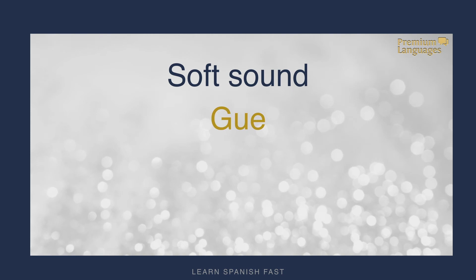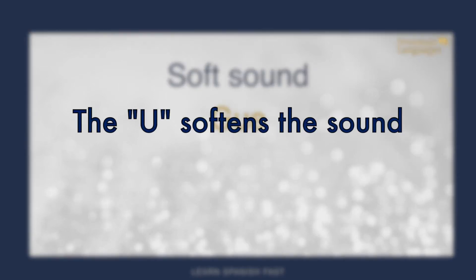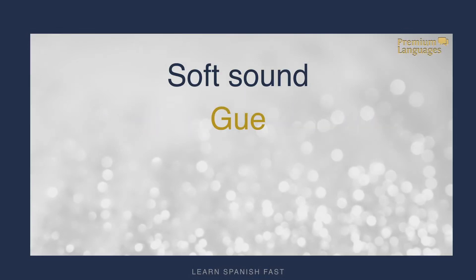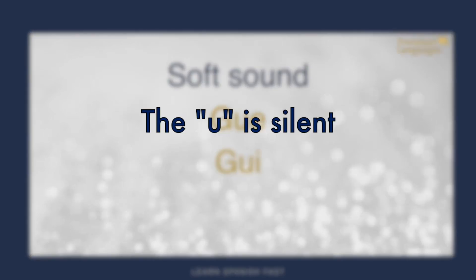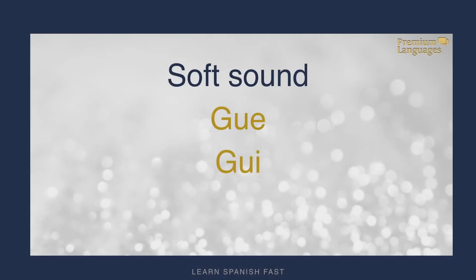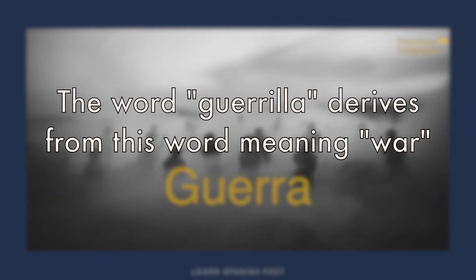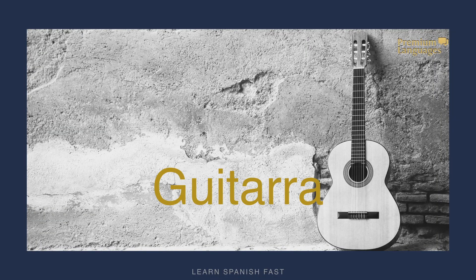The combination of G, U, and E produces a soft sound. If you add a U between the G and the E, it softens the sound from GHE to GHE. The same applies with I. You shouldn't be surprised — it's the same in English with words like GUITAR or GUERILLA. In Spanish, the obvious examples are GUERRA and GUITARRA.